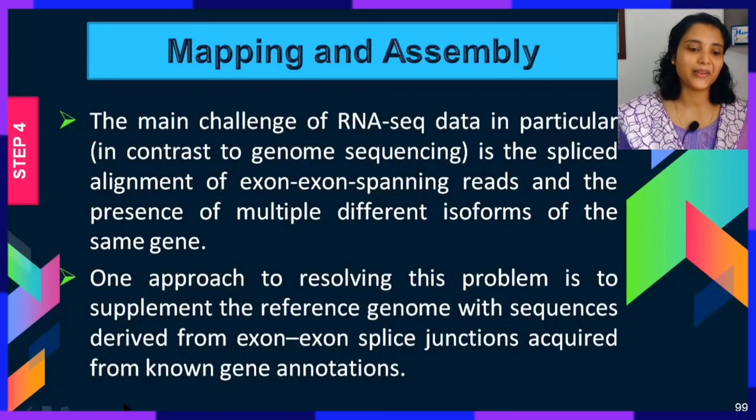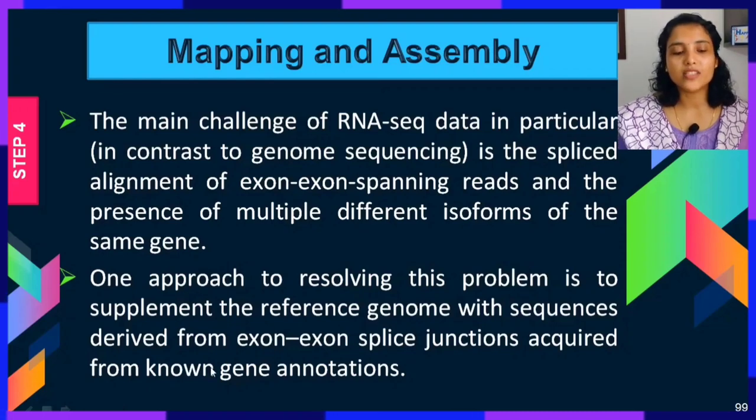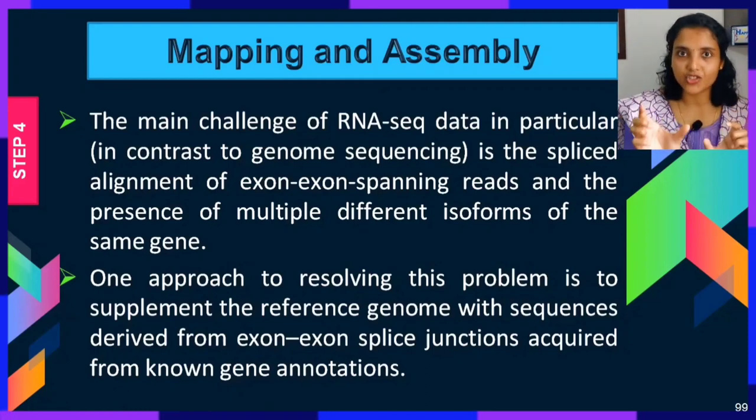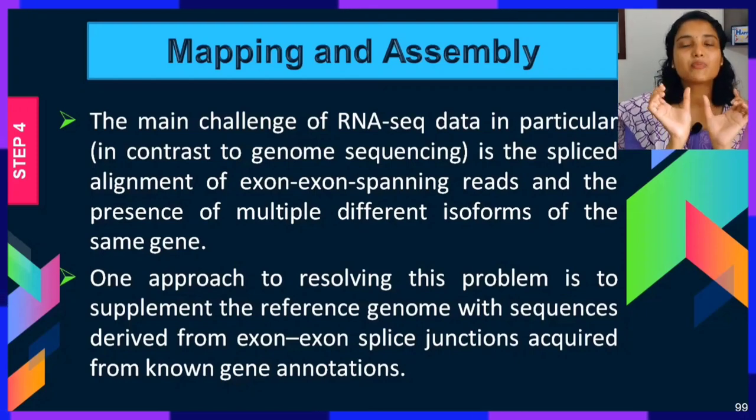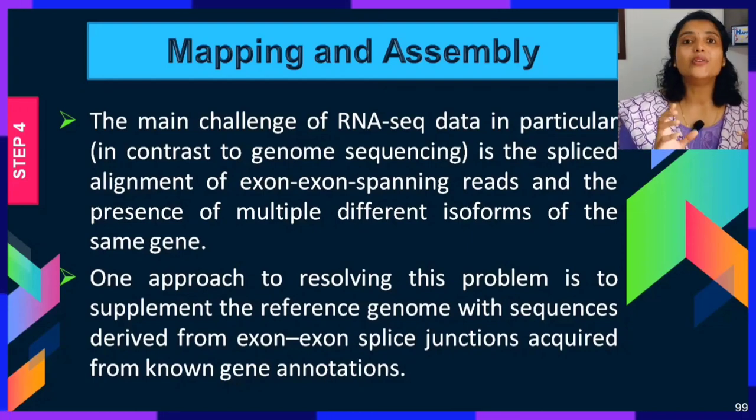In RNA-seq, a major challenge is exon-exon spanning reads. Unlike the normal genome, cDNA has no introns — they are removed by splicing. When you try to map cDNA reads to the reference genome, there will always be a gap wherever the intron was. Finding overlapping sequences across these gaps is a major challenge. One approach is to supplement the reference genome with sequences derived from exon-exon splice junctions acquired from known gene annotations, which can aid in mapping a newly sequenced cDNA.